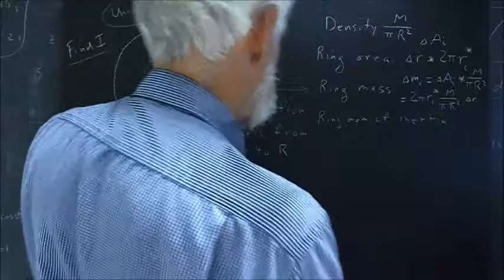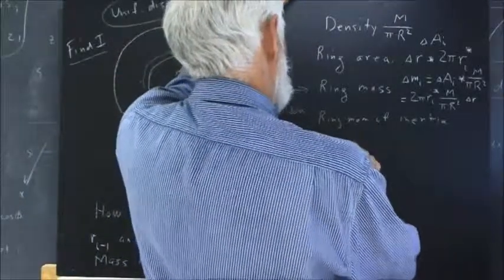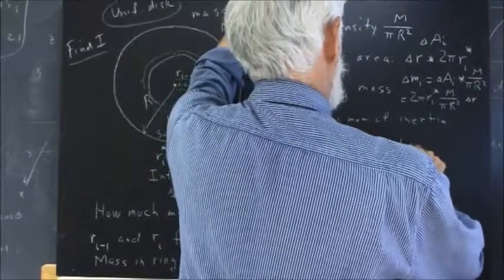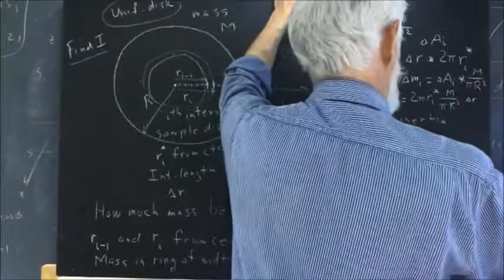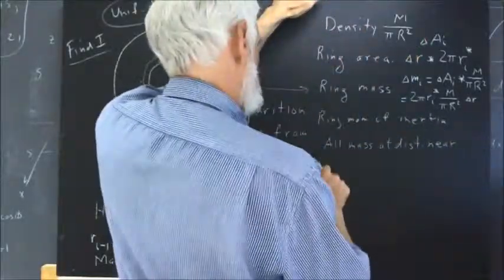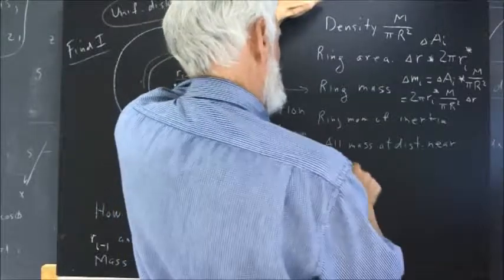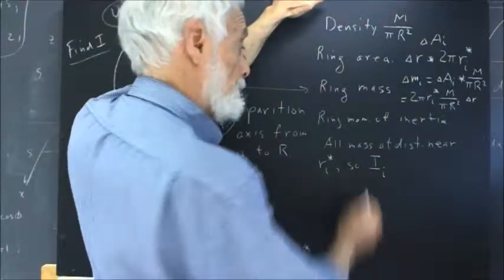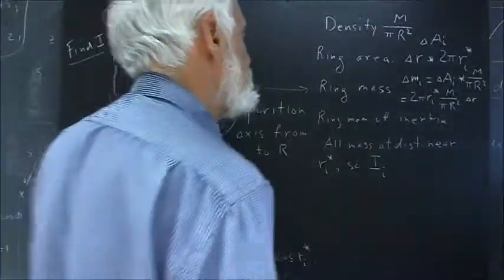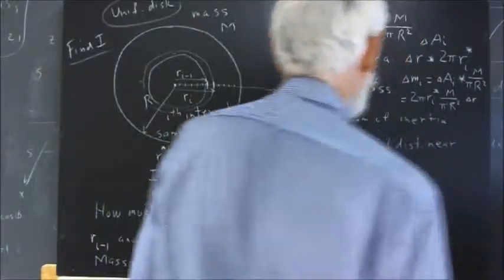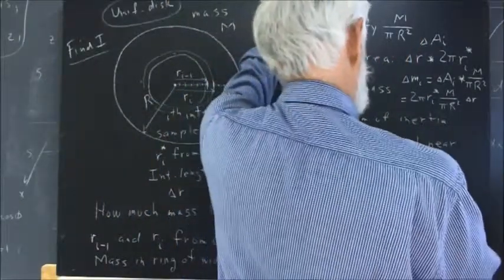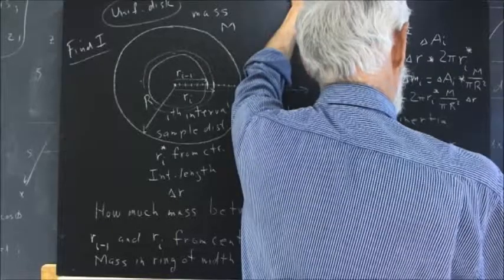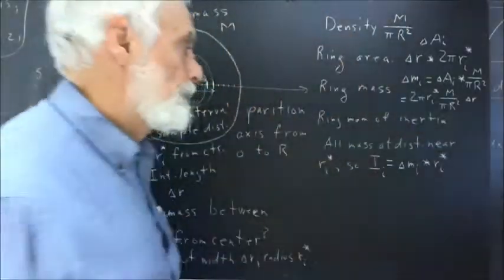Okay, so all the mass is at distance near R sub i star. So moment of inertia sub i, the moment of inertia for the i-th sub interval, is the mass in the i-th interval times R sub i star squared.